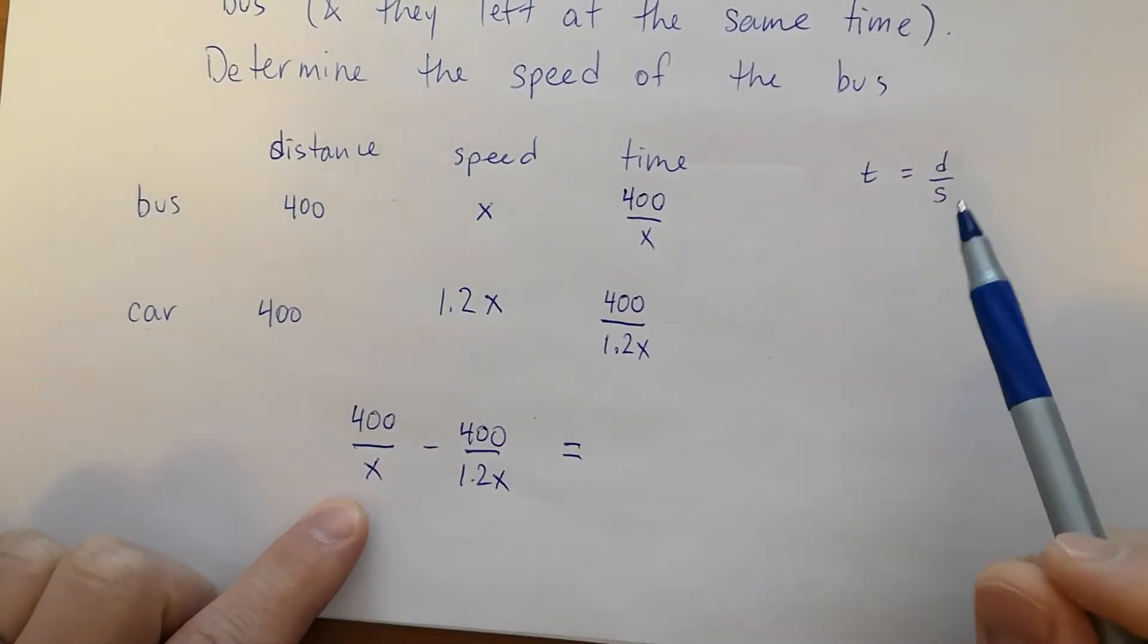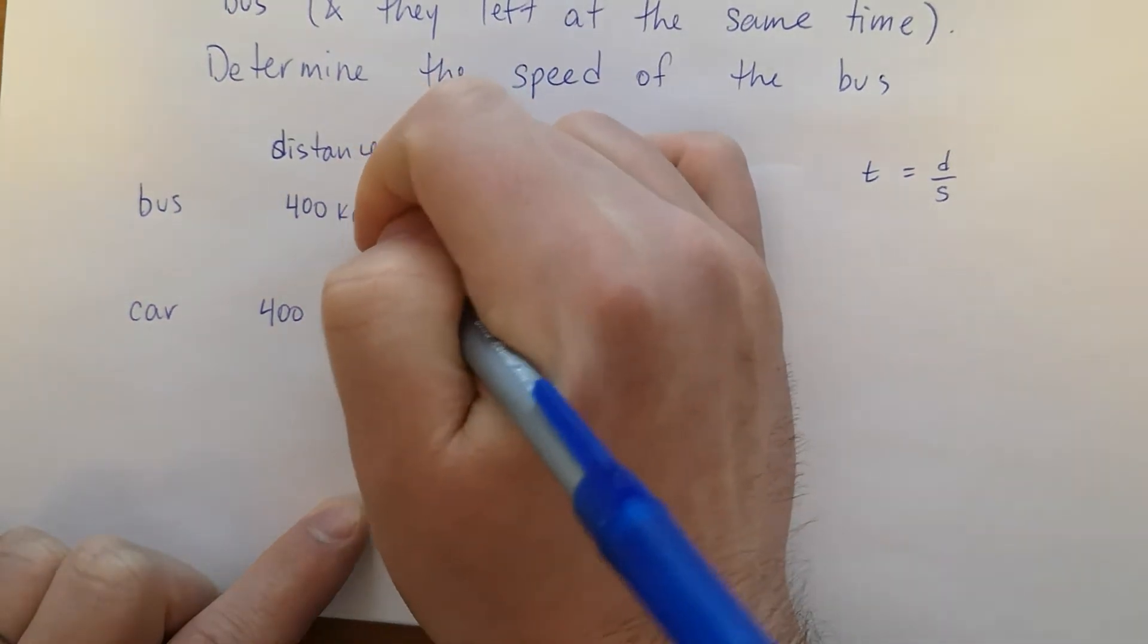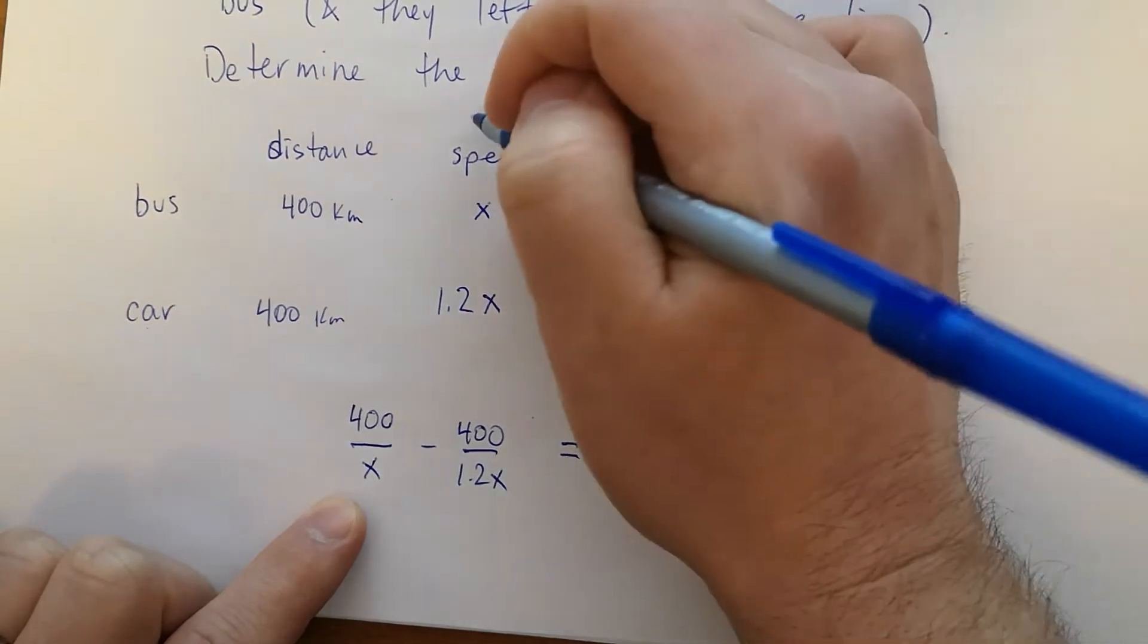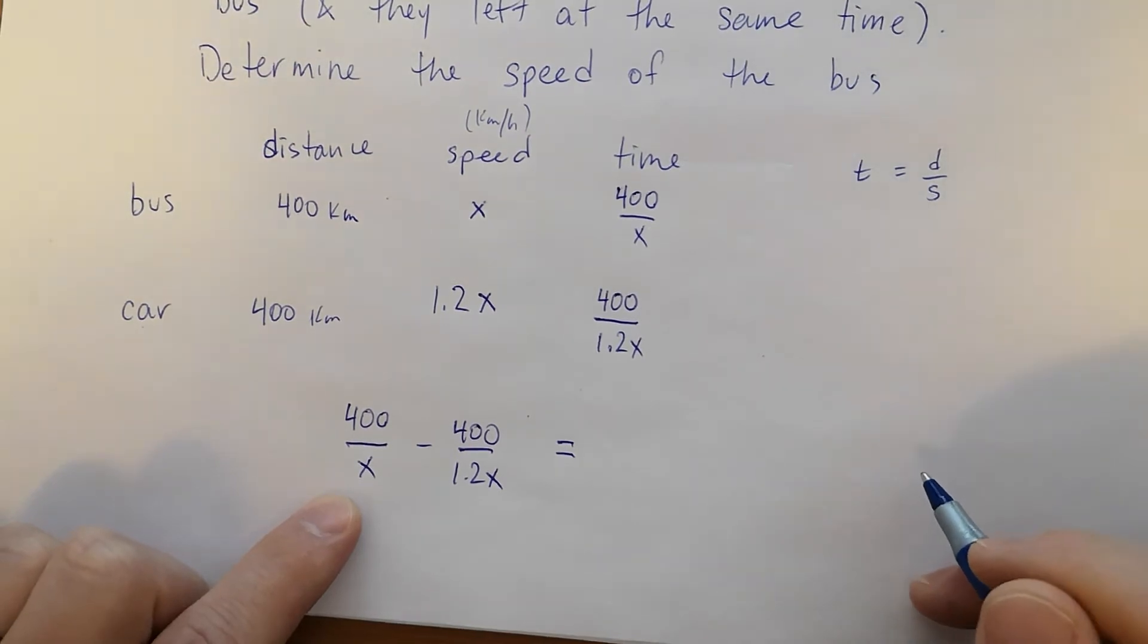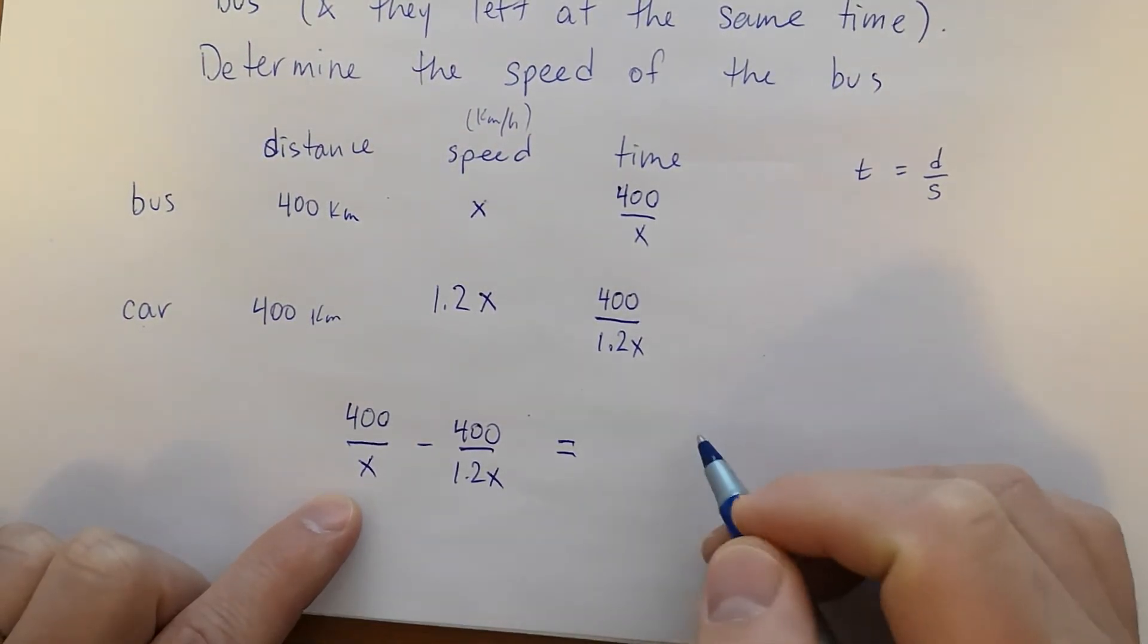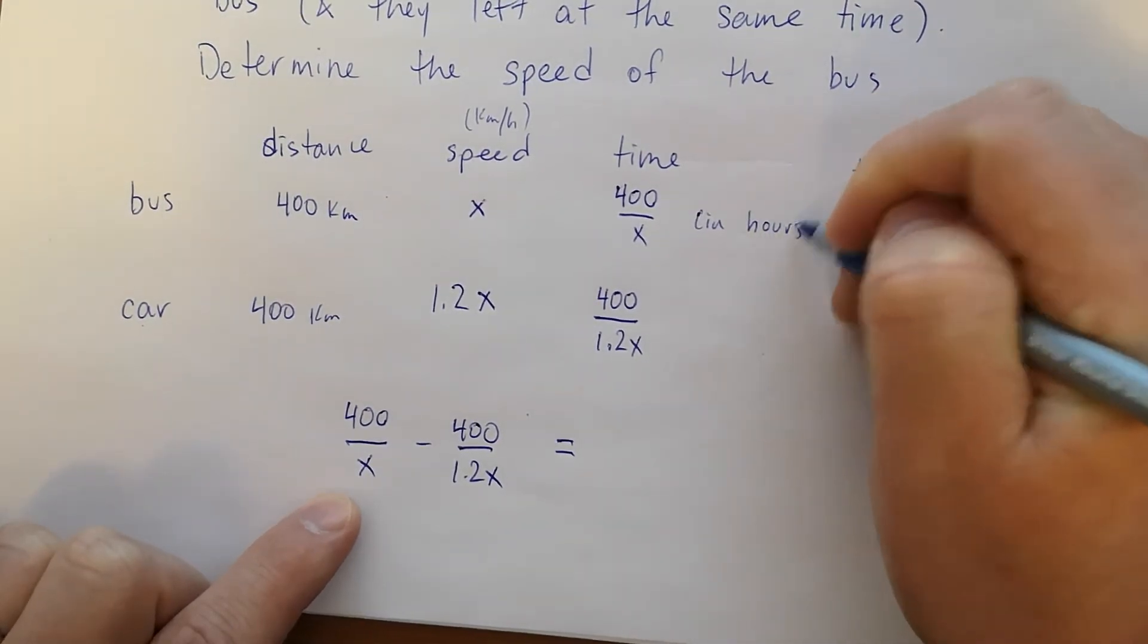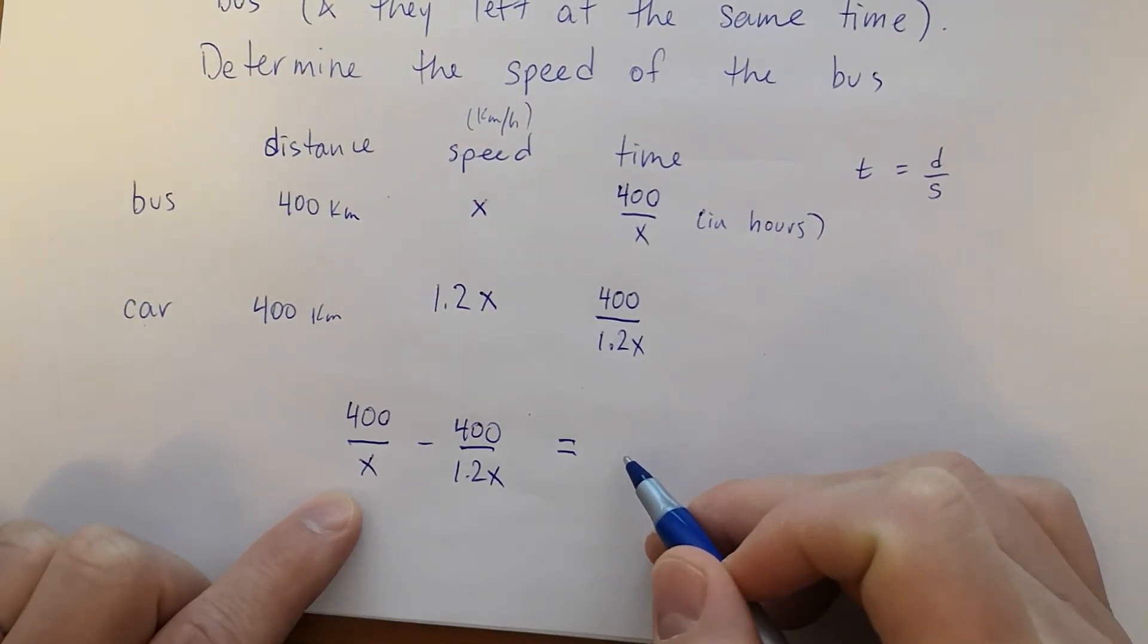But here's where it's going to get a little confusing. This distance is in kilometers. Speed, I think you'll expect is going to be in kilometers per hour. I don't want kilometers per minute because nobody uses that. So the time has to be in hours. If we just say that this equals 45, that would be saying that the car arrived 45 hours earlier. And that doesn't make a lot of sense.